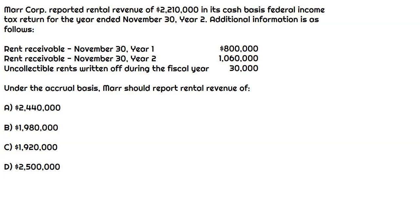This is a fairly tricky question because we need to prepare a rent receivable roll forward to figure out what MAR would record as rental revenue under the accrual basis. All we have is the beginning and ending rents receivable balance, which is basically the same as an accounts receivable balance. We know they reported $2,210,000 of rent under the cash basis method for their federal income tax return. This question also mentions that there was uncollectible rents written off during the year of $30,000, so we will need to factor that in as well.